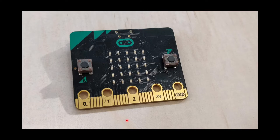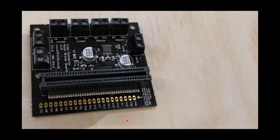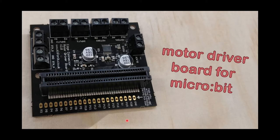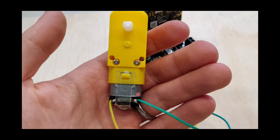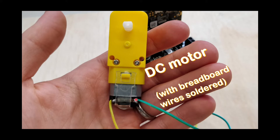You will need one micro bit, one motor driver board for a micro bit, one DC motor. This is a DC motor. Mine has gears on it to make it move slower, this shaft moves much slower. But you can just do it with the motor itself. The motor does need to have wires soldered to it, breadboard wires.